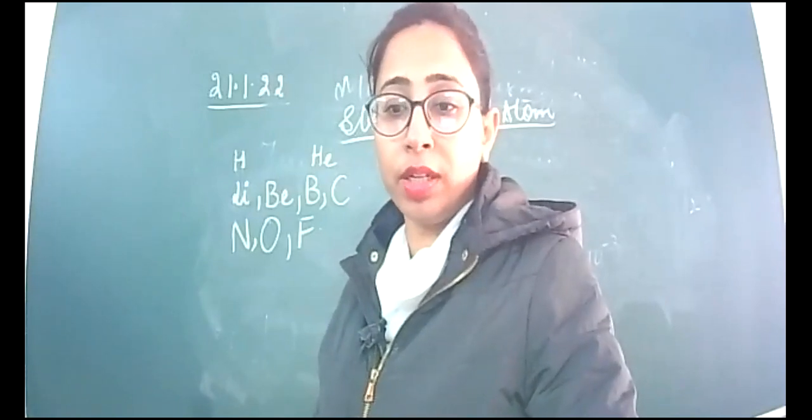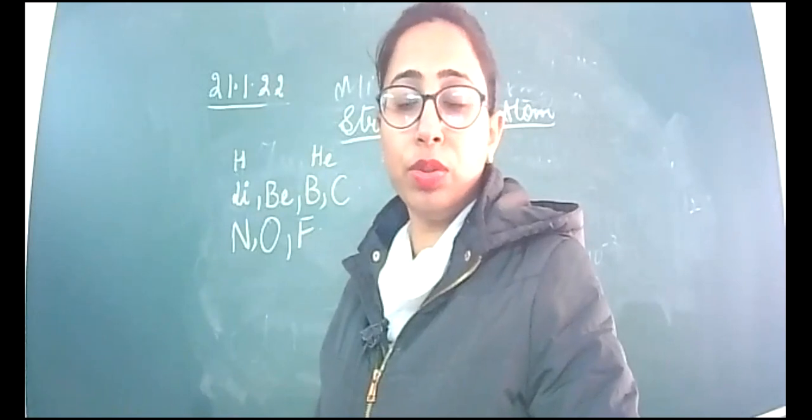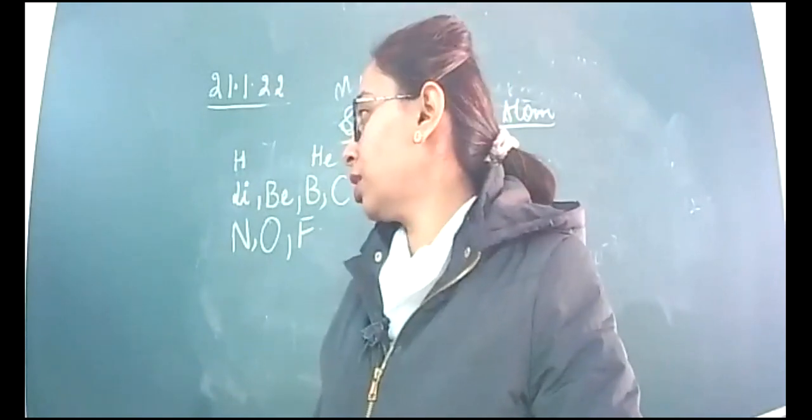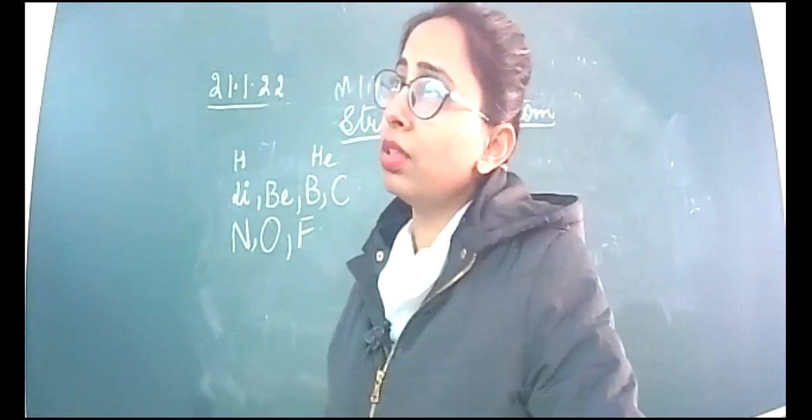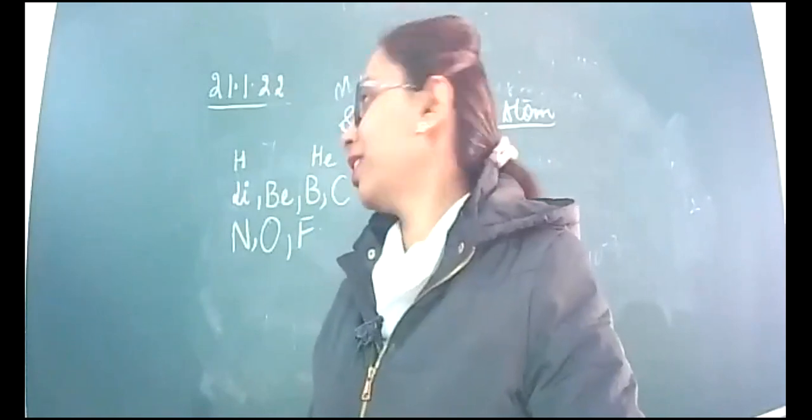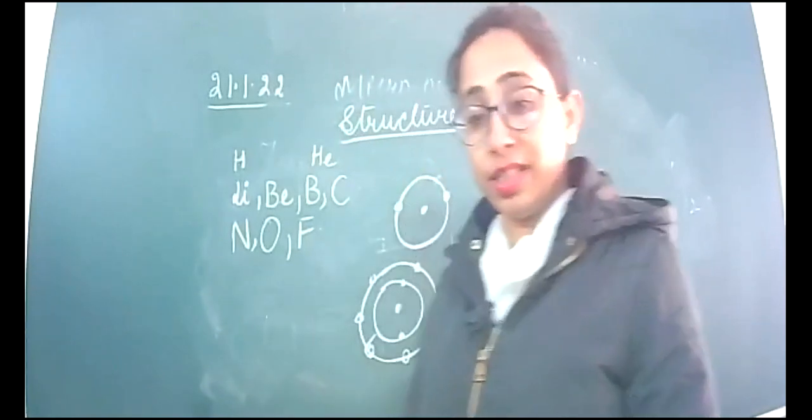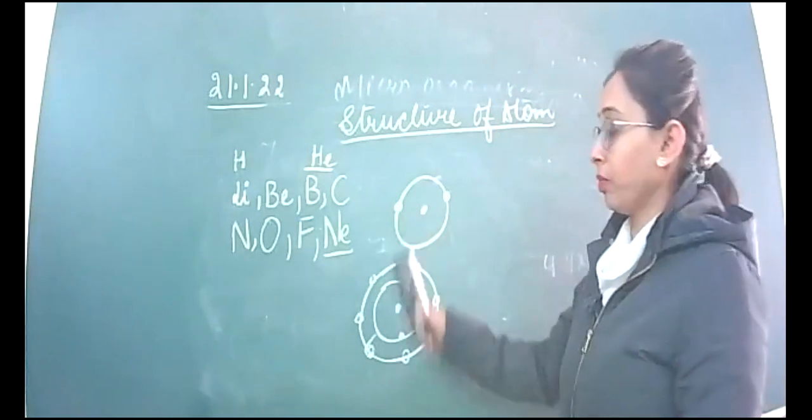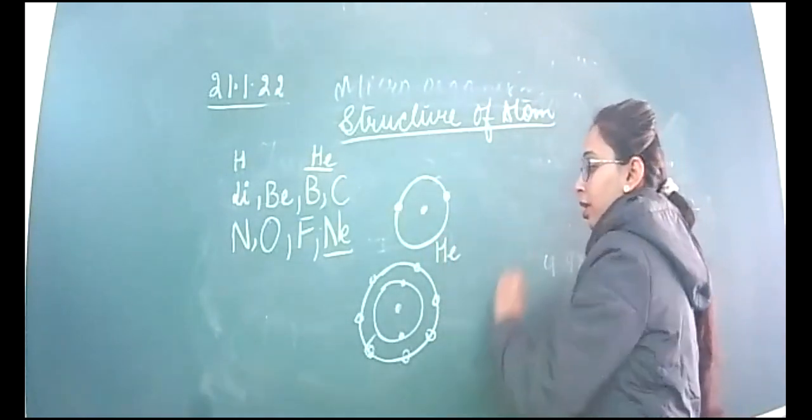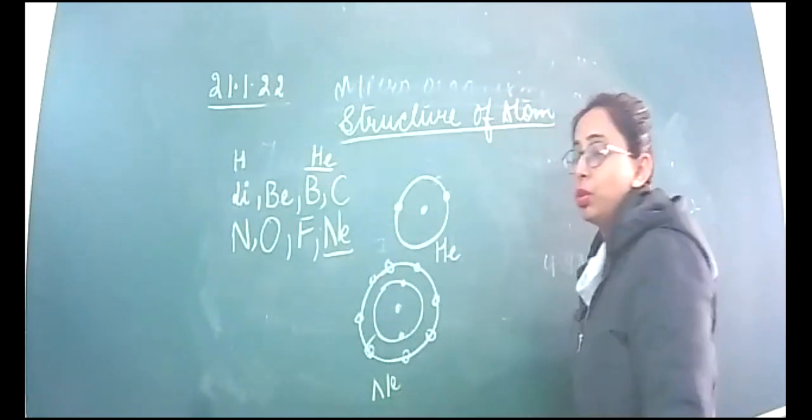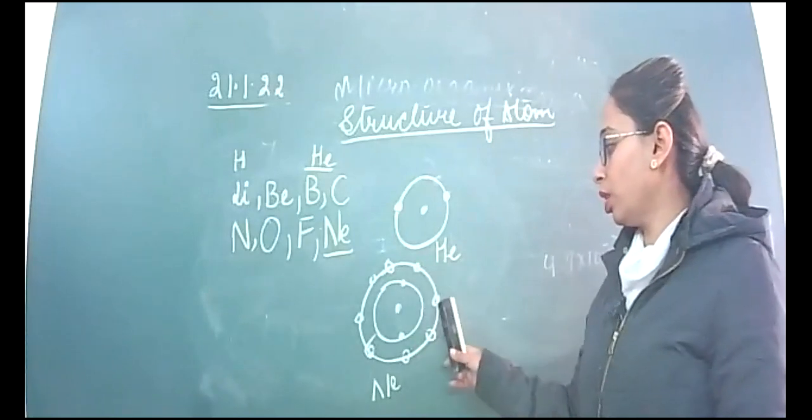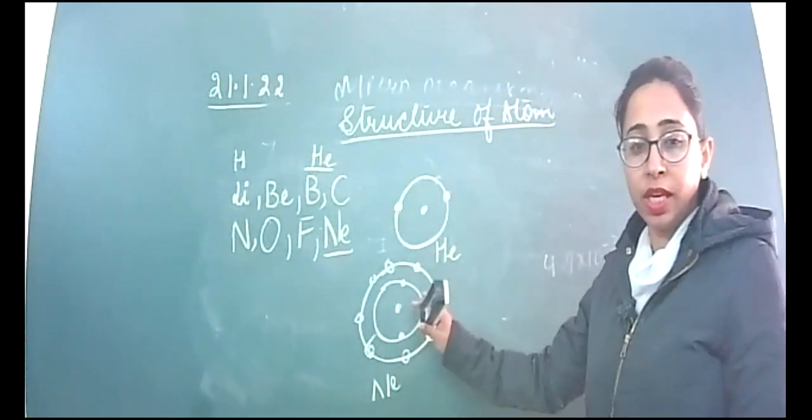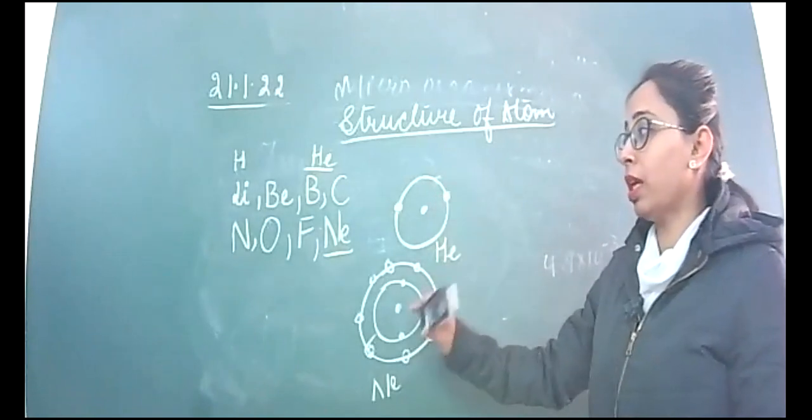Now the next element is neon, N-E, a noble gas. Helium is a noble gas whose first shell is complete. Now neon has arrived, whose last shell is also complete. Its second shell has 1, 2, 3, 4, 5, 6, 7, 8 electrons complete now. So these two are noble gases with atomic numbers 1 and 10.